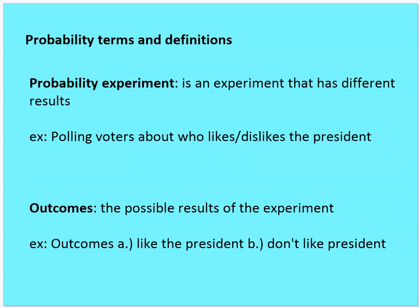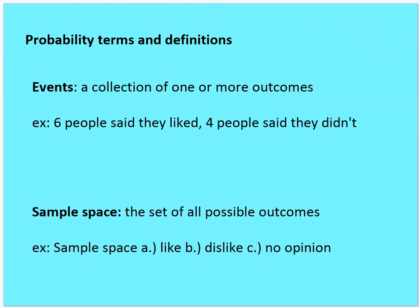So more terms. A probability experiment is an experiment that has different results. An example might be polling voters about who likes or dislikes the president. Outcomes would be the possible results of the experiment — like the president, don't like the president, or don't care. Events would be a collection of one or more outcomes, so we could say six people said they liked it, four people said they didn't like the president, and two people said they didn't care. The sample space is the set of all possible outcomes: like, dislike, and no opinion.